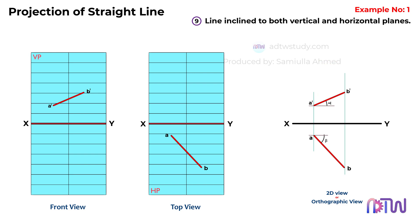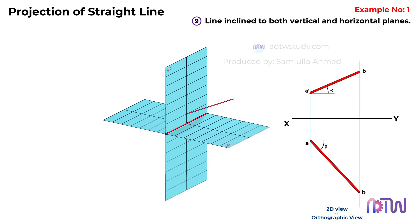Now, let's tackle how to find the true length of a line that's inclined to both the vertical and horizontal planes. If our line was inclined to just one plane, we'd easily see its true length in one of the views.